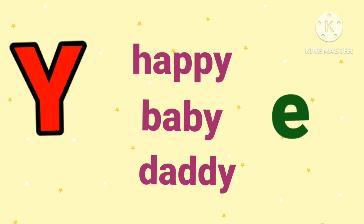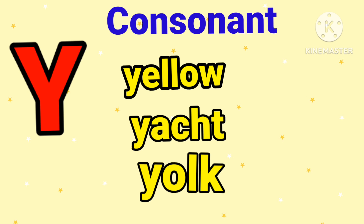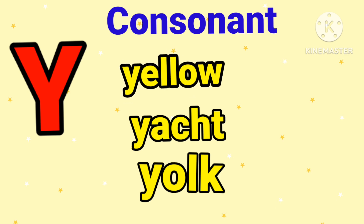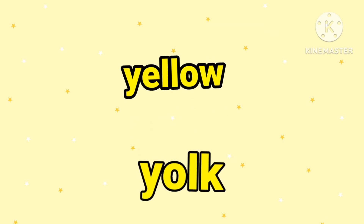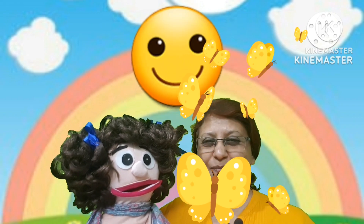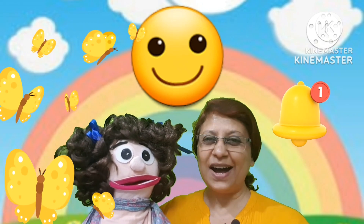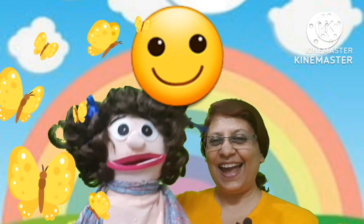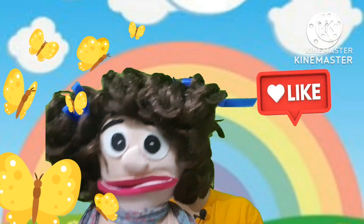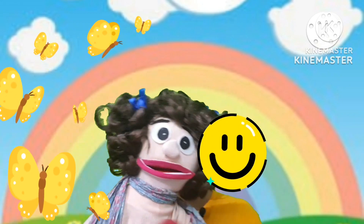Letter Y is considered to be a consonant when it makes a 'ya' sound, as in yellow, yacht, and yoke. Thank you for watching our channel — please click on the bell icon and subscribe to our channel, and do not forget to like and share. Bye bye friends!